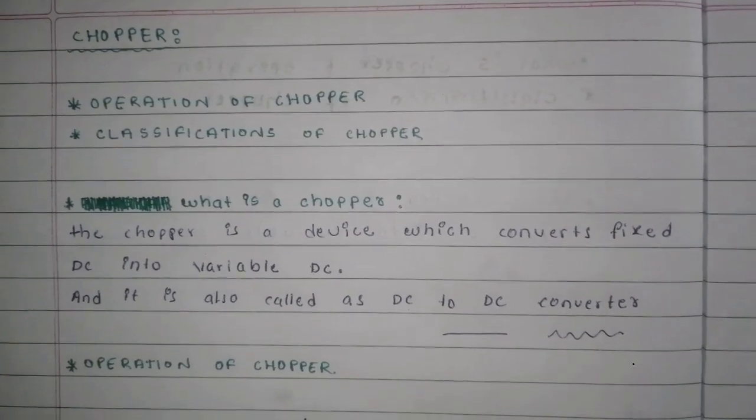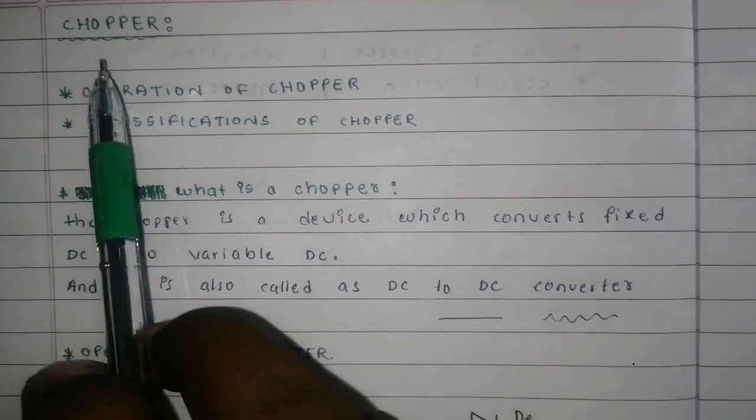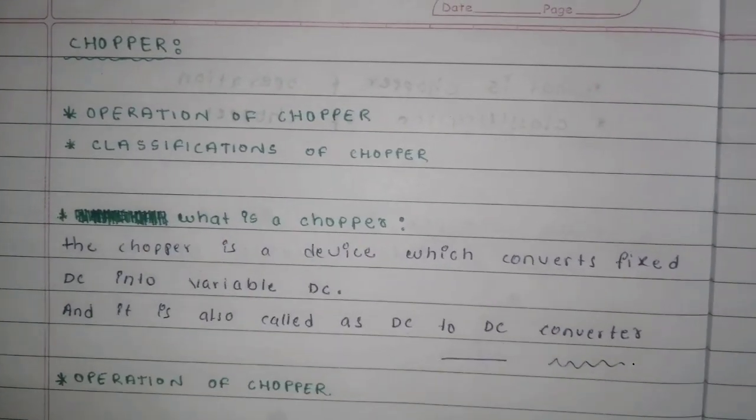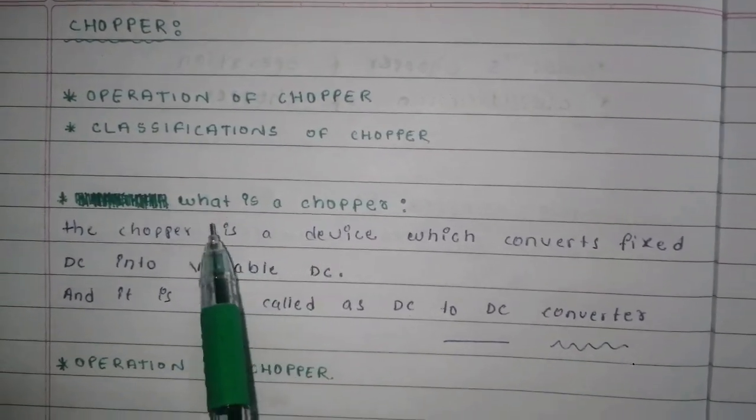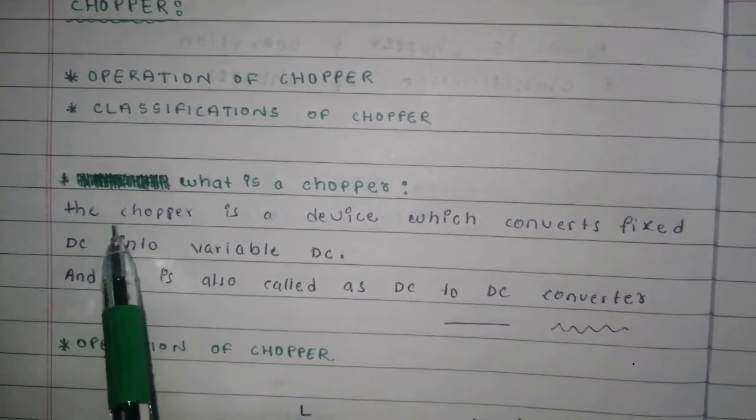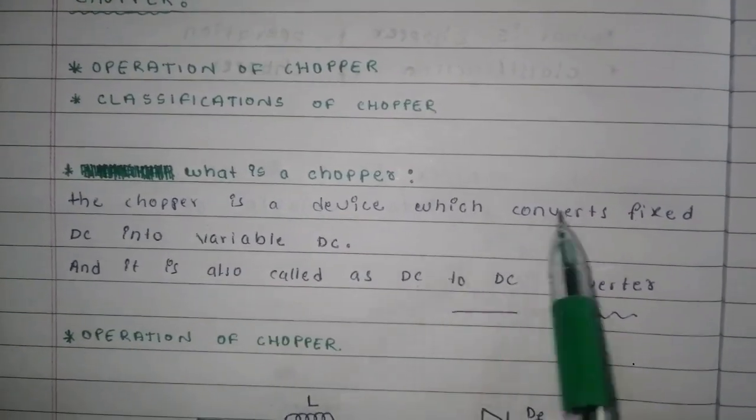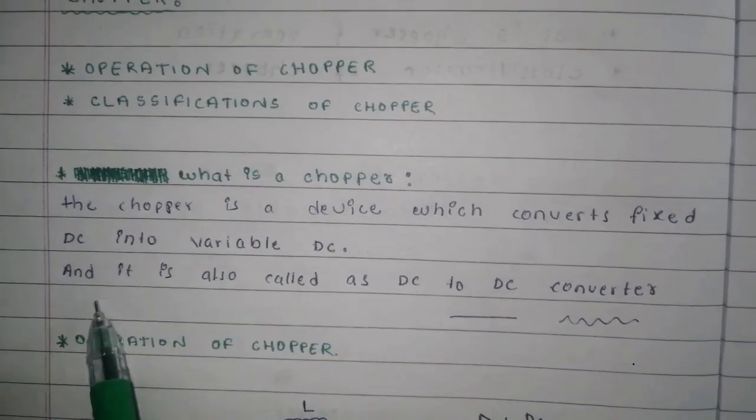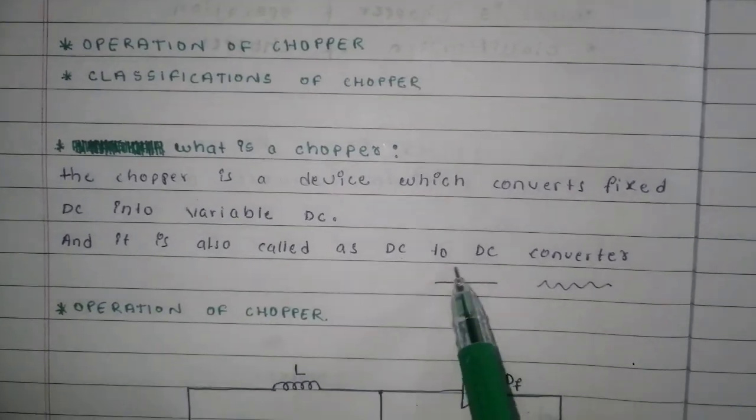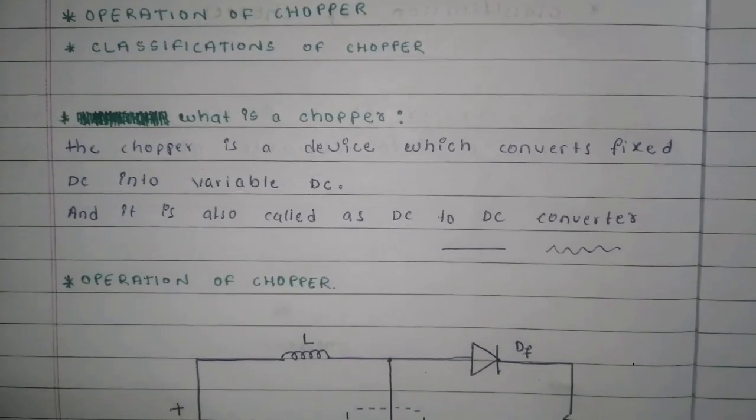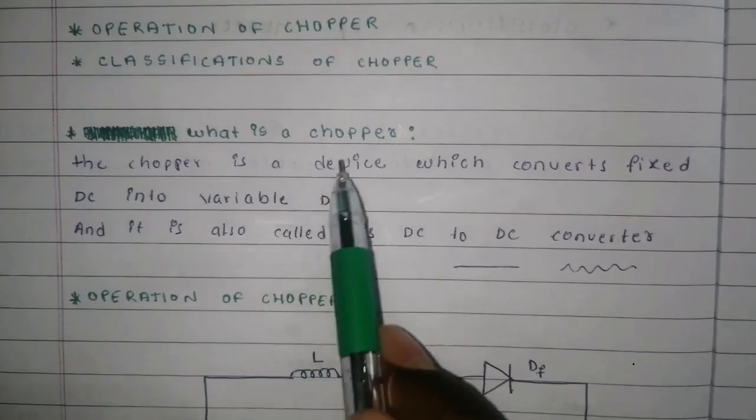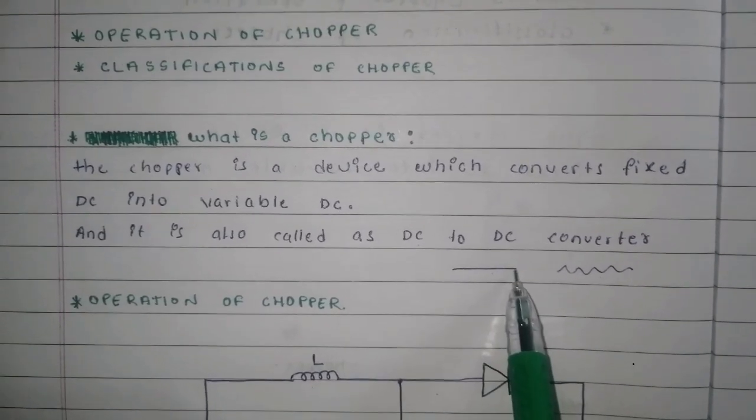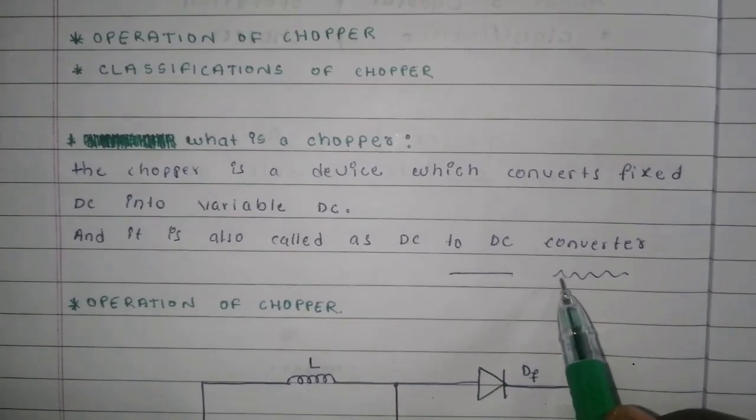In this video, I am going to explain chopper operation and classification of chopper. What is a chopper? The chopper is a device which converts fixed DC into variable DC, and it is also called a DC to DC converter.